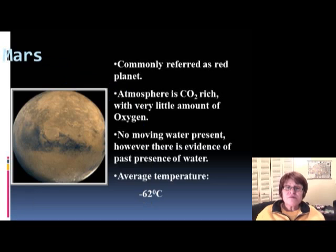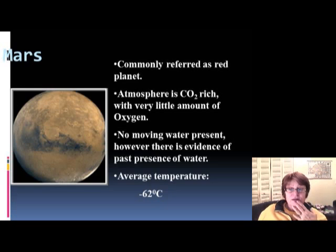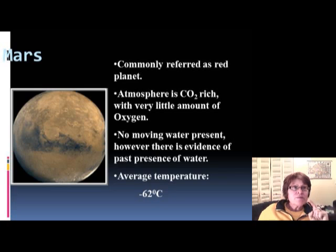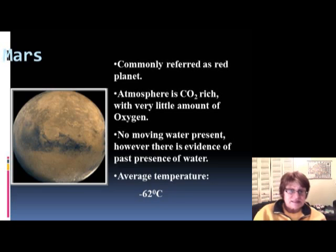Mars is commonly referred to as the red planet. It has a CO2-rich atmosphere with very little oxygen, which as we discussed isn't good for us. However, we could potentially deal with it — what could we put on Mars to convert CO2 into oxygen? If you answered plants, that's a great answer, because plants actually do that.